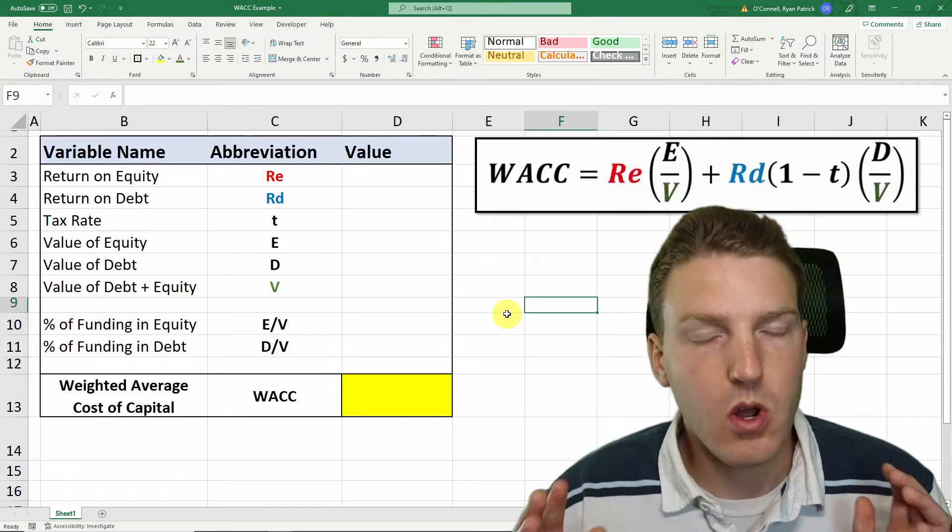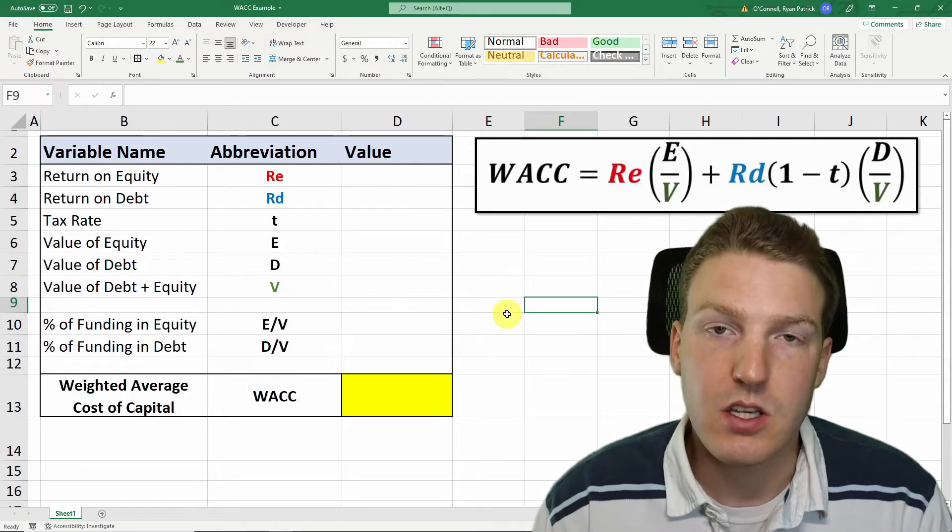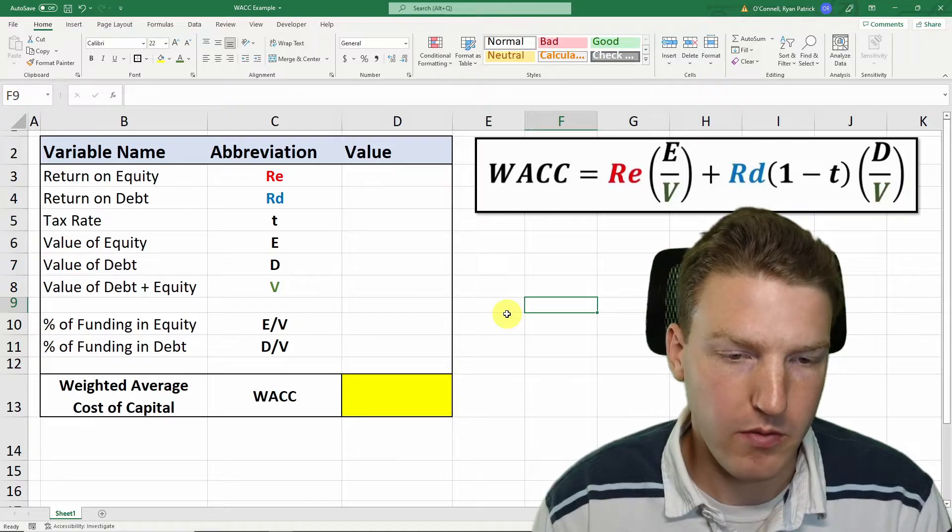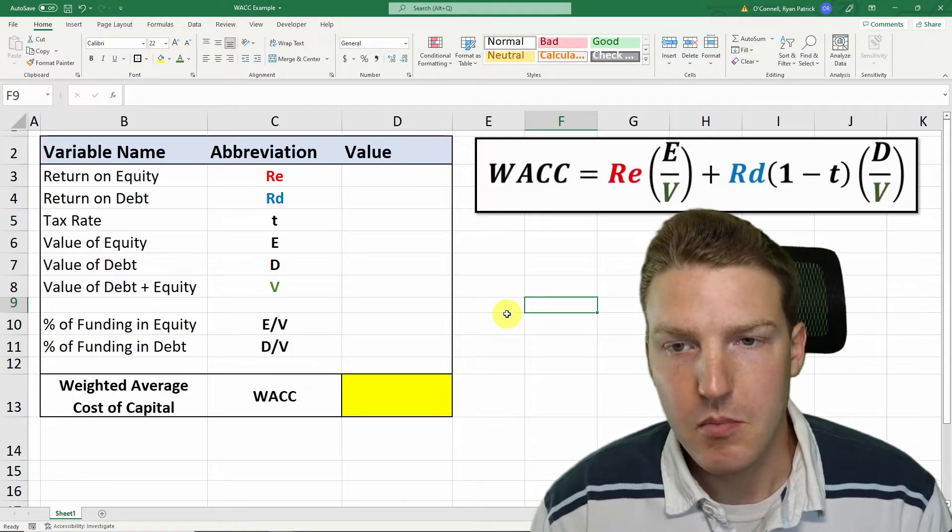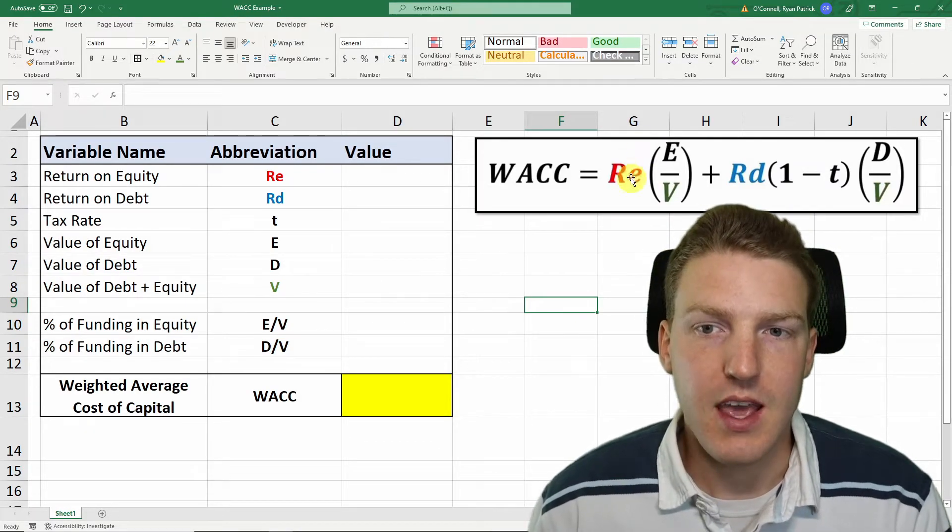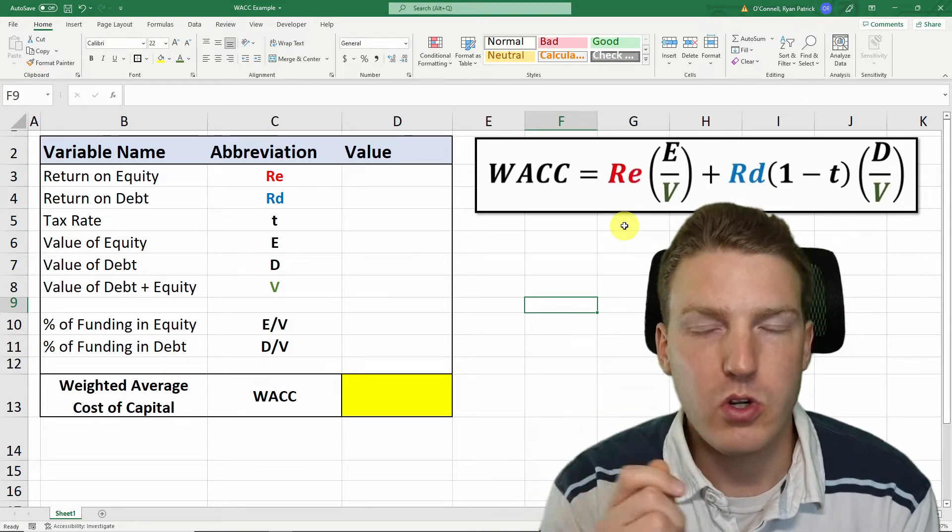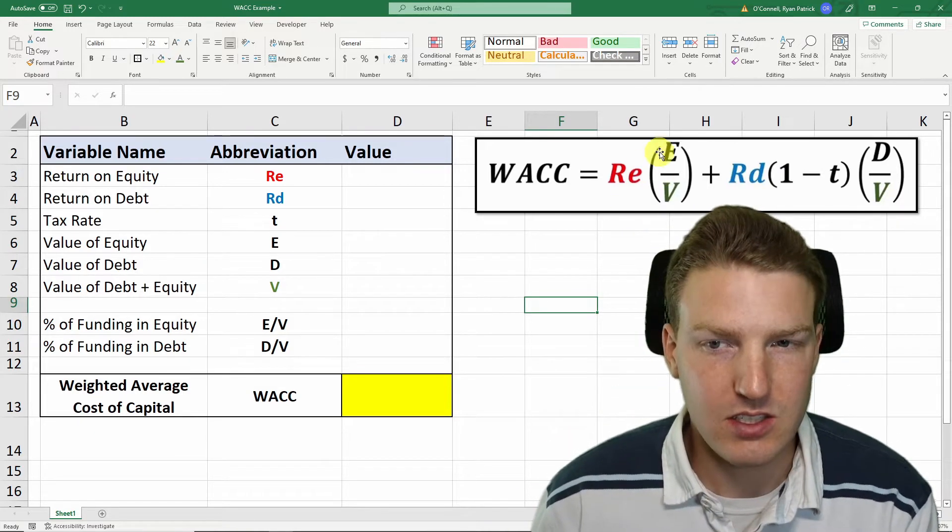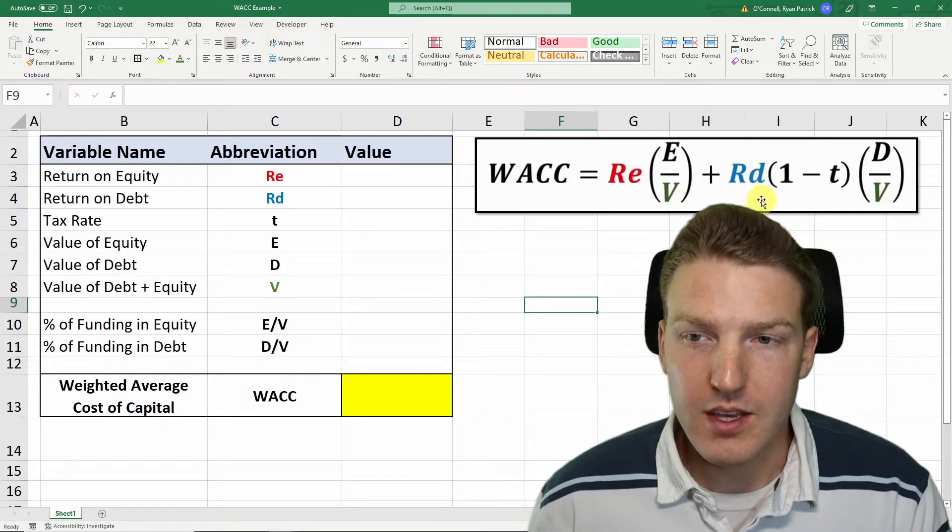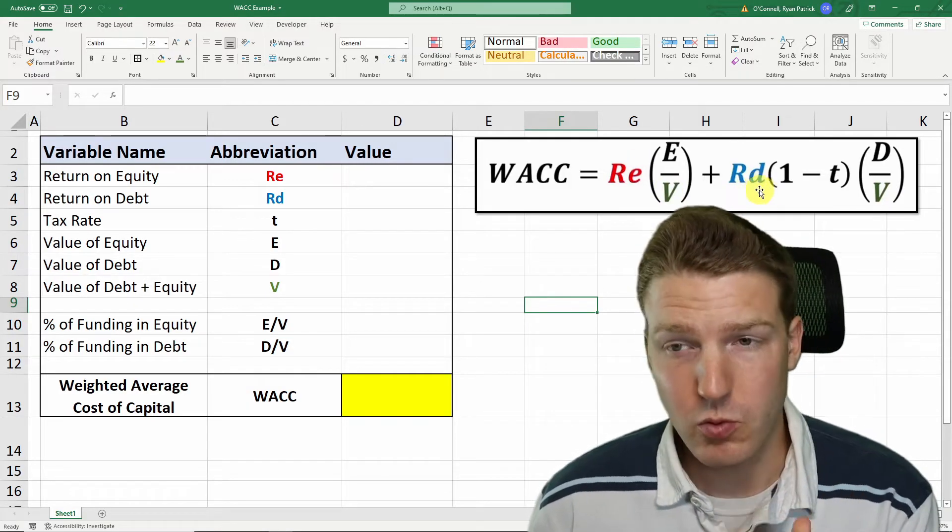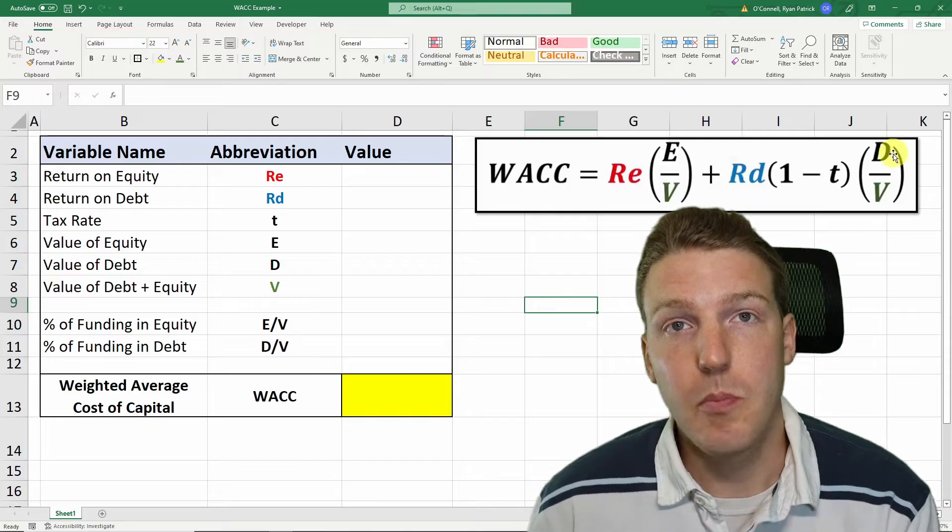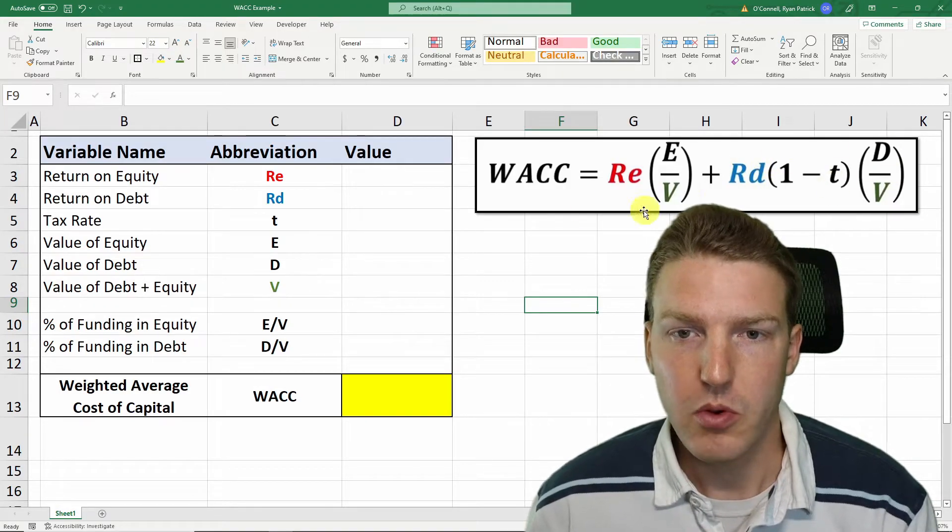When someone owns a business, there's basically two ways that they can secure more funding. They can either get money from equity, which means they get cash in exchange for giving someone else part ownership of the business. That's what stocks and equity are. Or they can borrow money in the form of debt, which would mean going to the bank to get a loan.